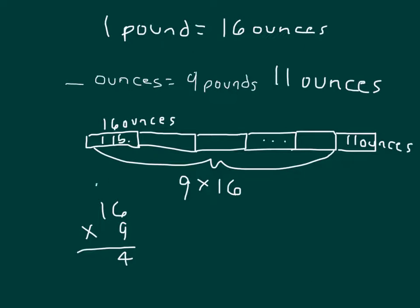So we figure out 16 times 9 first to get the number of ounces that those 9 pounds are worth. 4, regroup the 5. 9 times 1 is 9, plus 5 is 14. So 9 times 16 is 144 ounces for those 9 pounds. And then we can add back in those 11 ounces to get 155 ounces.